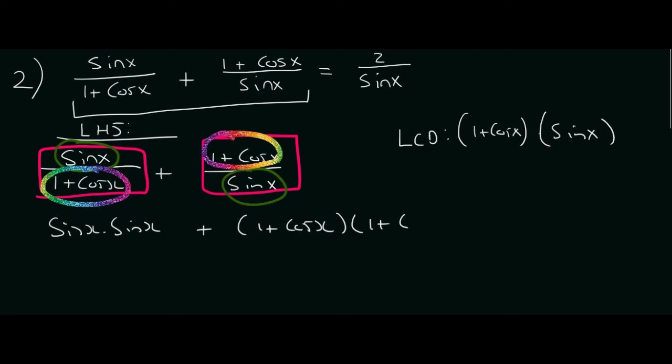And then another 1 plus cos x, and all of that is going to be written over the lowest common denominator which is 1 plus cos x times sin x.